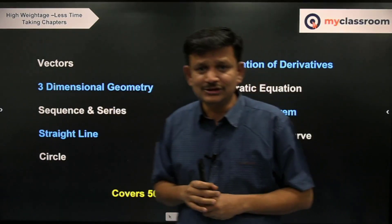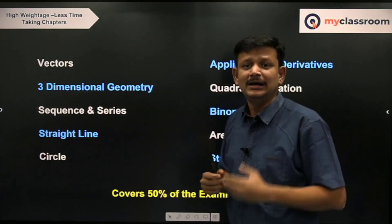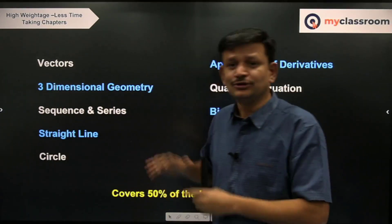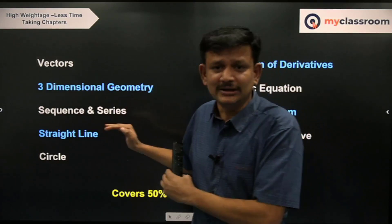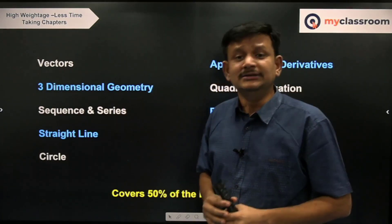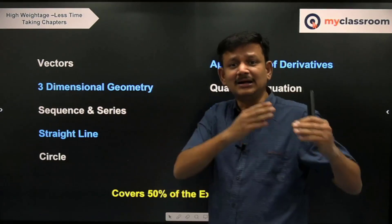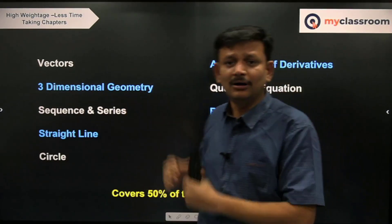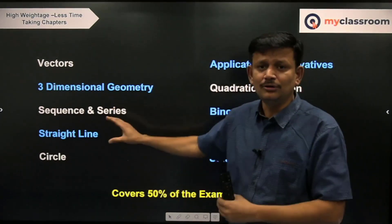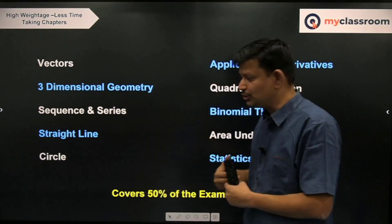Straight Lines looks like it has plenty of formulae, but more importantly it has plenty of varieties of questions. Stick to archives — whatever basic questions are being asked in JEE Main, just solve them and recap all the formulae. You will have a strong hold because you have been using them across all chapters of coordinate geometry.